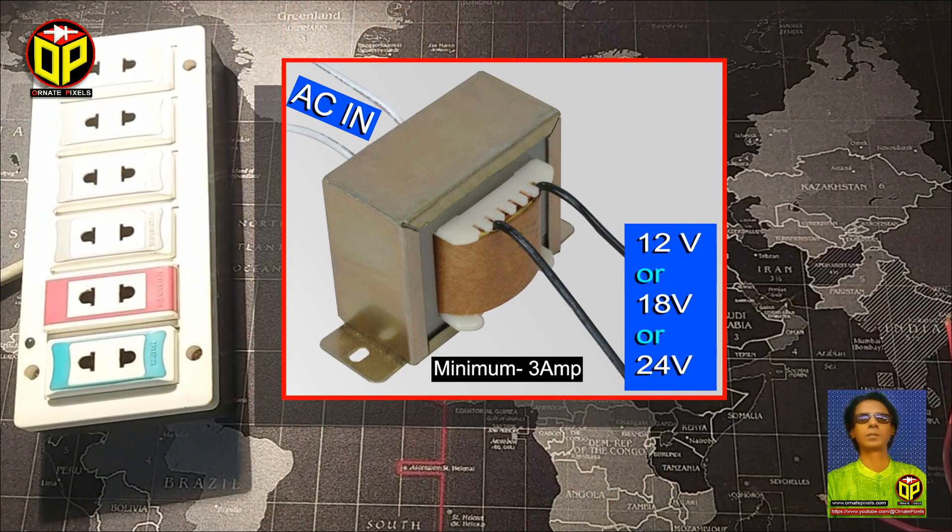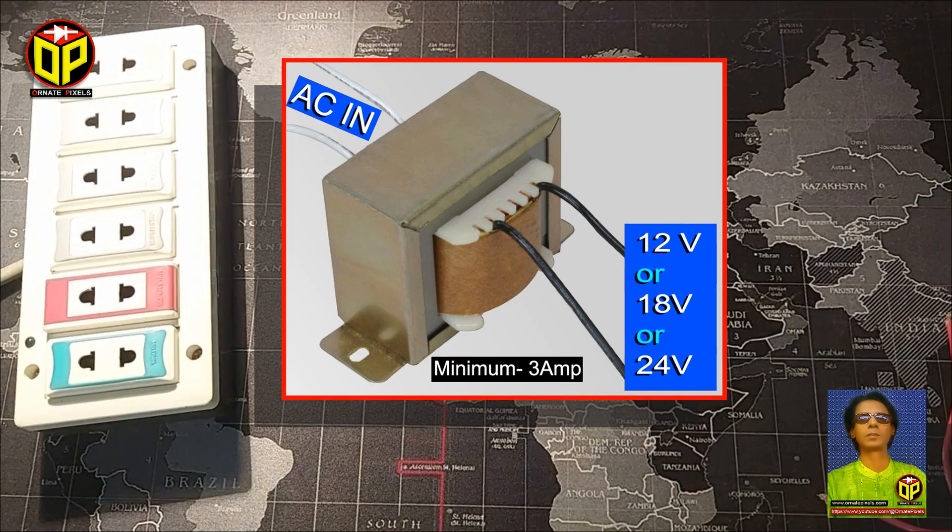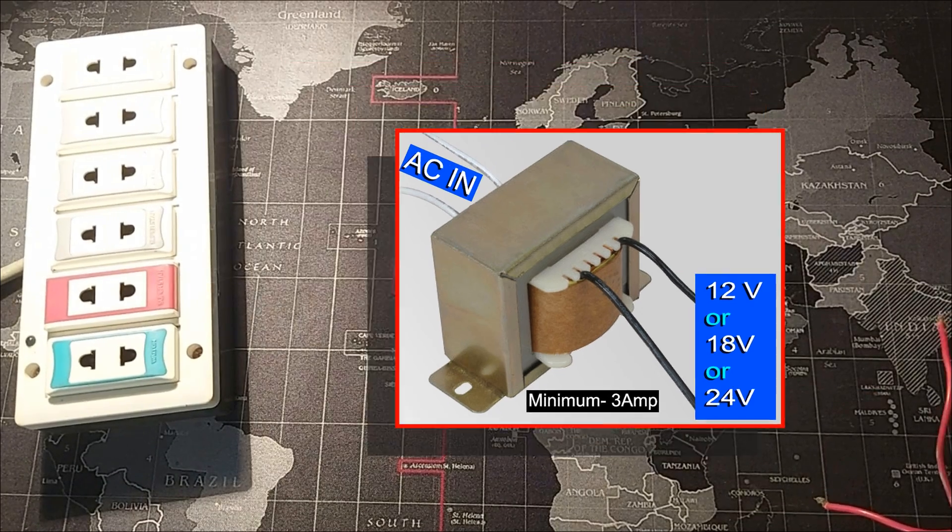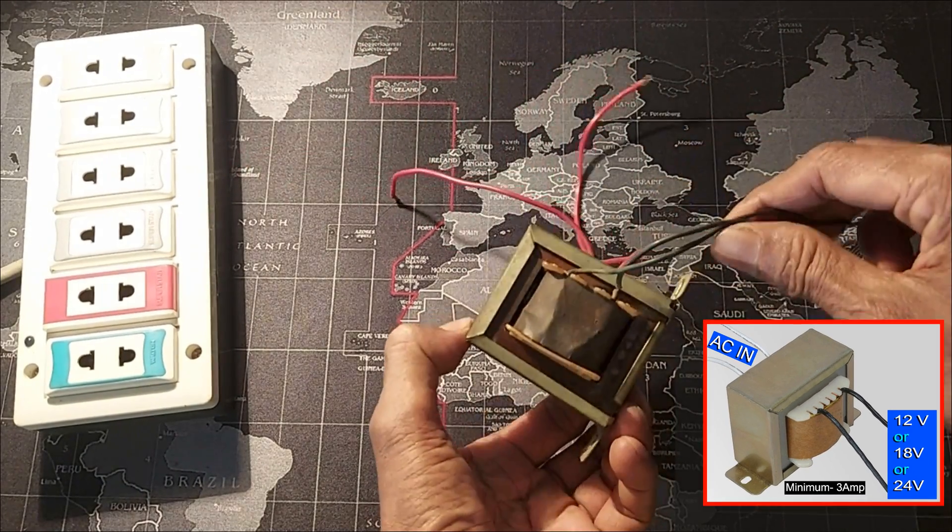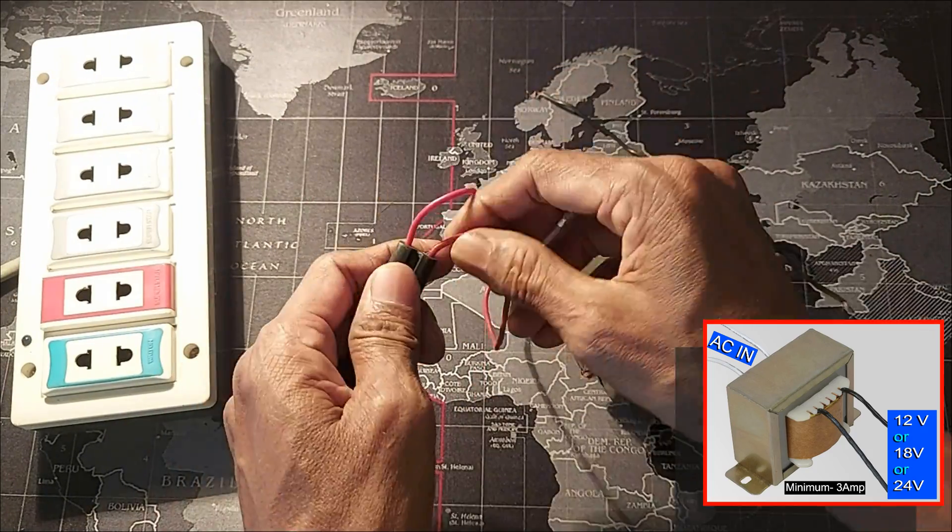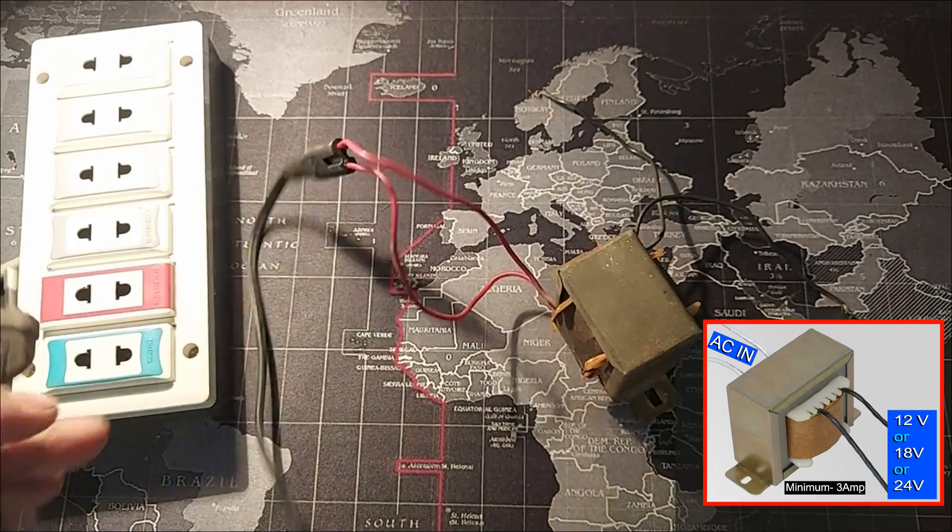A 12V or 18V or 24V transformer is required to make the LCD short killer device. You can also use a black and white TV's power transformer. Be it any transformer of this type, first connect the power to it.